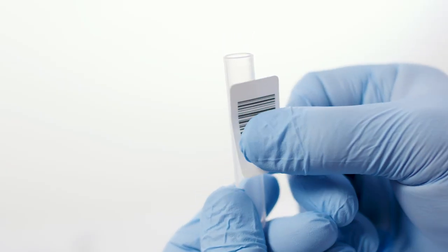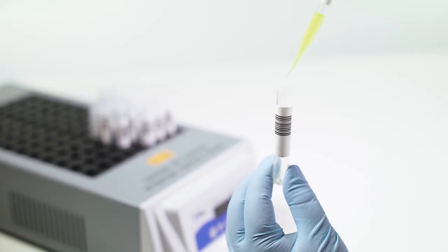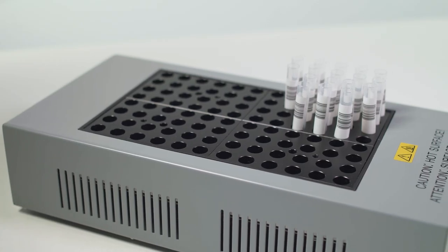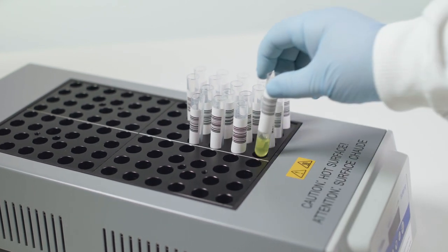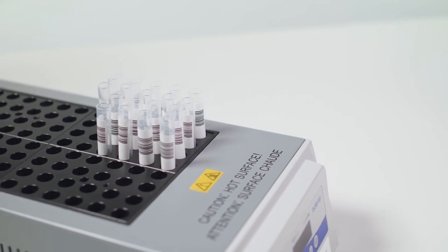Following this single enrichment, one milliliter of the broth is added into barcode-labeled Solus boiling tubes. The Solus boiling tubes are then heated in a heating block for 15 minutes at 85 degrees C and placed into a rack ready for the DS2 automation.